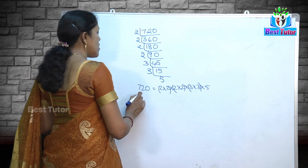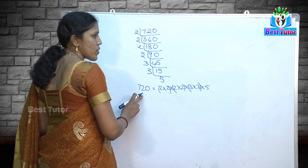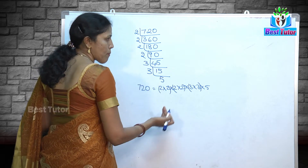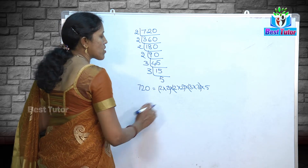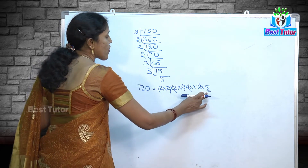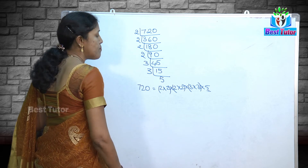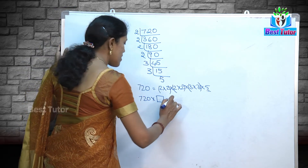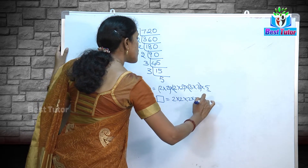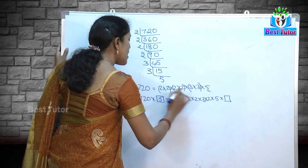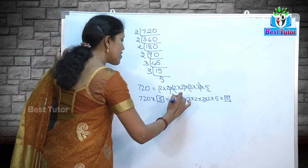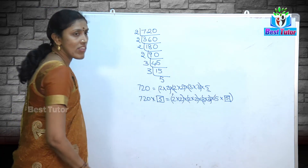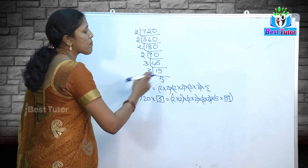How do we find a number which, when multiplied with 720, gives a perfect square? The question is: what is the least number with which 720 must be multiplied so that the product is a perfect square? Since 5 is the troublesome prime that has no pair, if we multiply by 5, then all primes will have pairs. So 5 is the least number with which 720 must be multiplied so that the product is a perfect square.